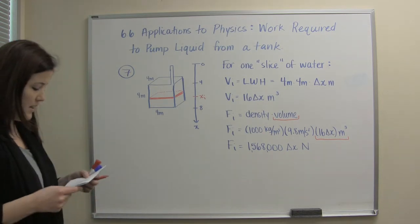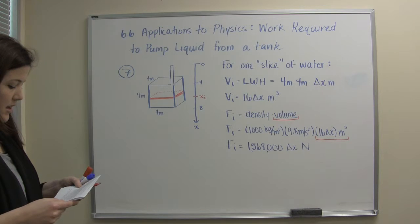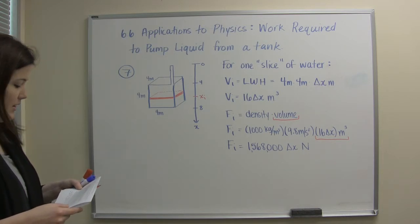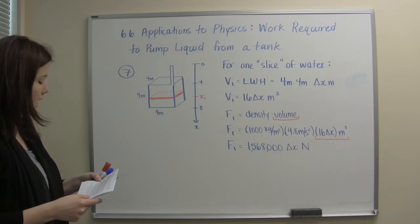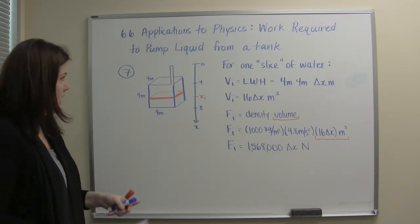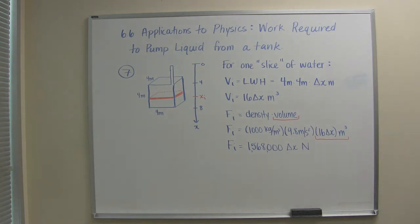Problem number seven says a cubical tank has dimensions four meters by four meters by four meters. It's completely filled with water and we need to find the work required to pump all the fluid through a pipe that has an opening eight meters from the bottom of the tank. So let's take a look at this diagram and see how we can set up this problem to get to the work.